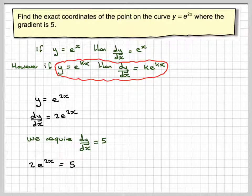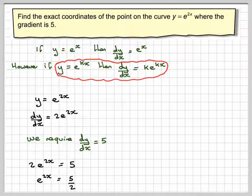We want exact coordinates, so we won't be using our calculator. The first thing to do is to divide by 2. So we've got e to the 2x is 5 over 2.